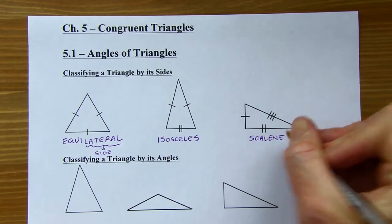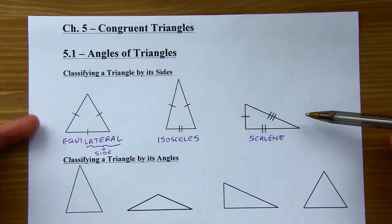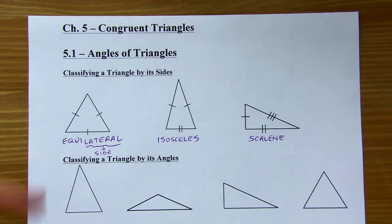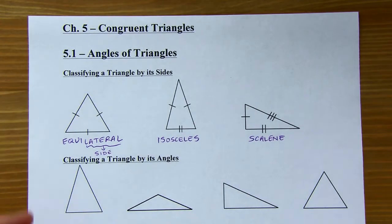So every triangle in the world and in the universe is going to fit into one of these three categories. That's one way to classify triangles, but you can also classify a triangle by its angles.